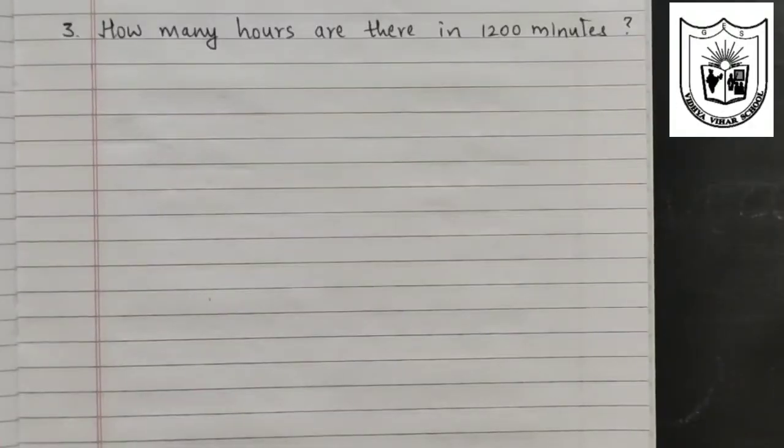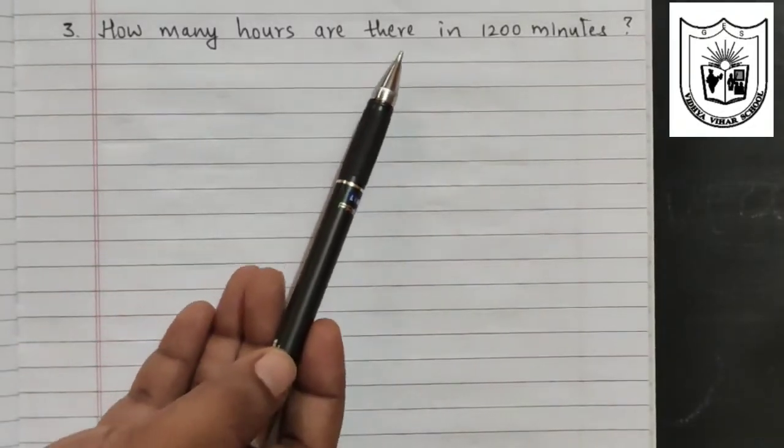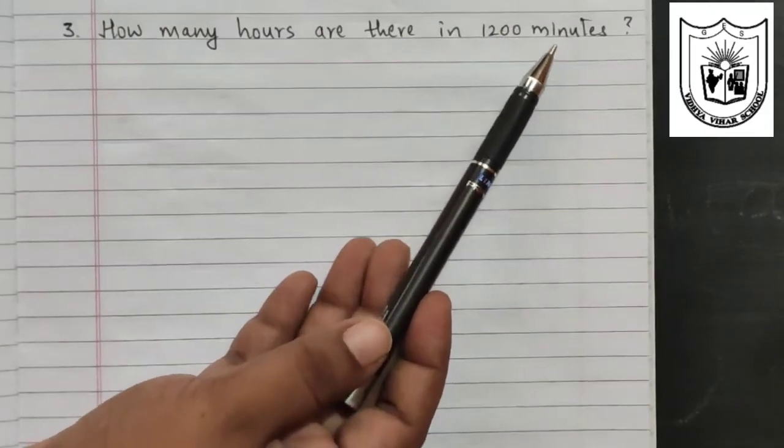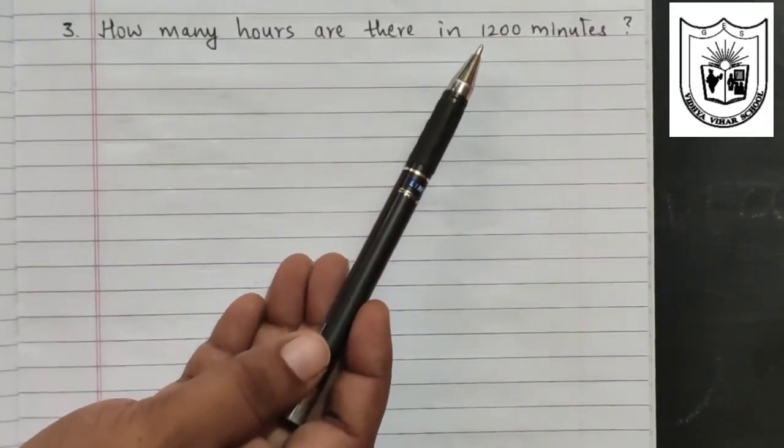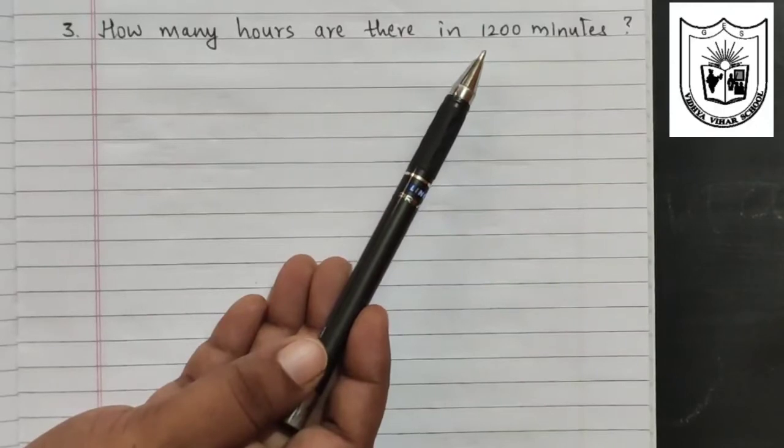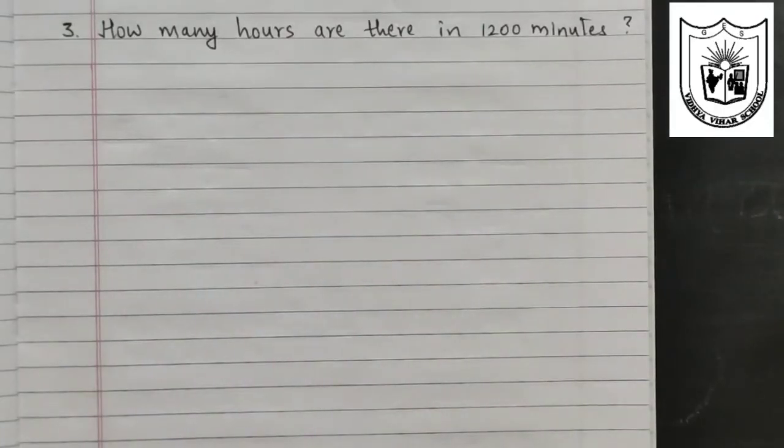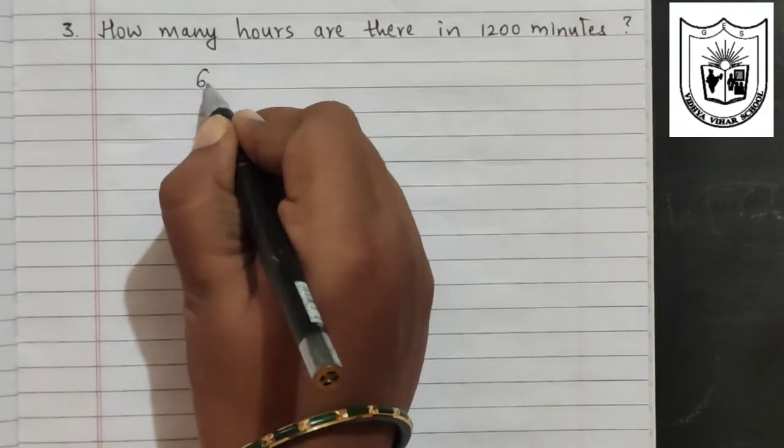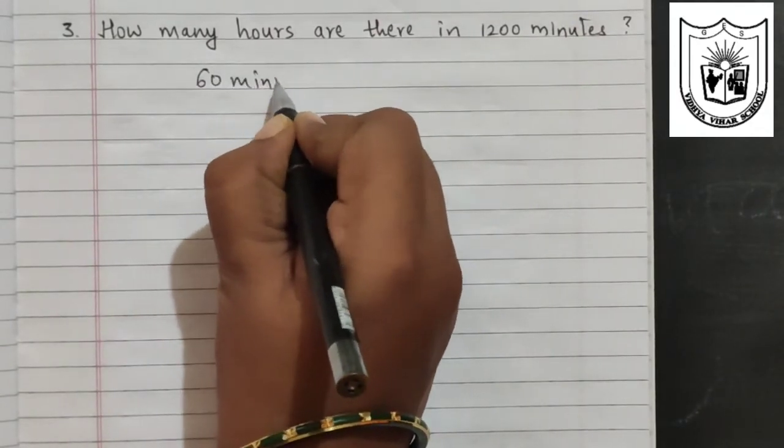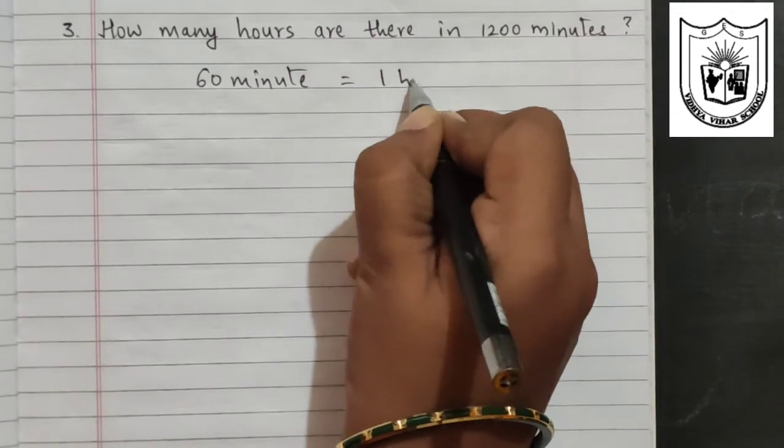Let us solve the third problem. How many hours are there in 1200 minutes? So to calculate this, first of all, we need to compare this with 1 hour. Now 1 hour has how many minutes? We all know 60 minutes is equal to 1 hour, isn't it?